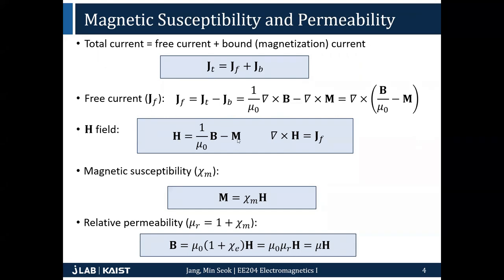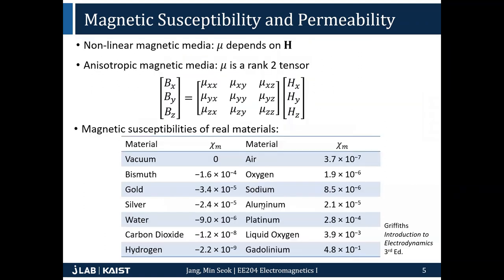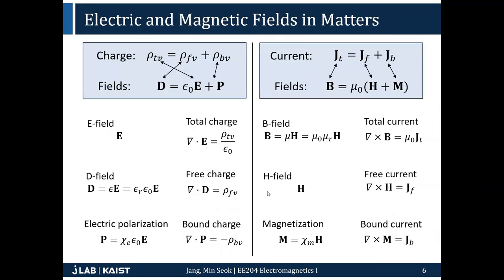The way it's defined is a little bit different — the signs are different. Also, the magnetic susceptibility connects H and M, not B and M. Because D = epsilon*E, if you follow the same rule it seems like H = mu*B, but it's actually the other way around. That's just because of the way it's defined — it's a convention.